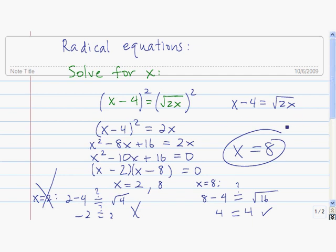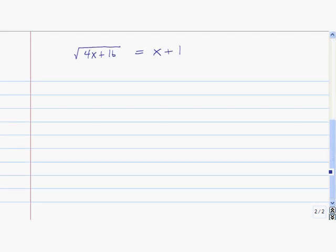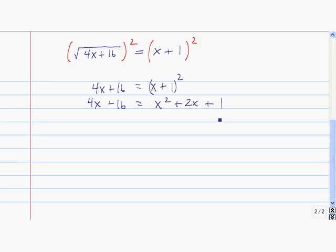I'm going to give you one to work on now. Pause while you work on this one. Squaring both sides gives us 4x plus 16 equals x plus 1 quantity squared. So from that we get 4x plus 16 equals x squared plus 2x plus 1. Subtracting 4x and 16 from both sides gives us 0 equals x squared minus 2x minus 15. The right hand side factors as x minus 5 times x plus 3. The solutions to this equation are x equals 5 and negative 3.